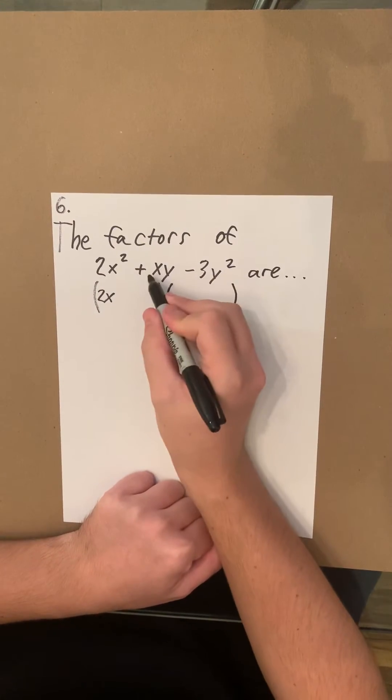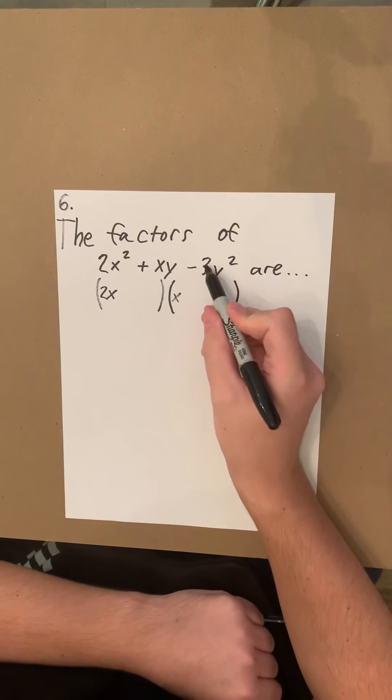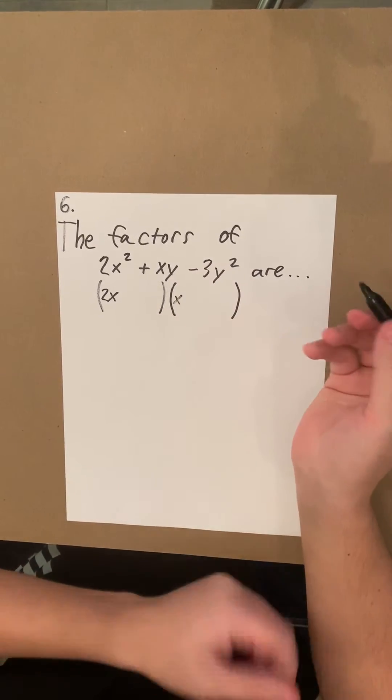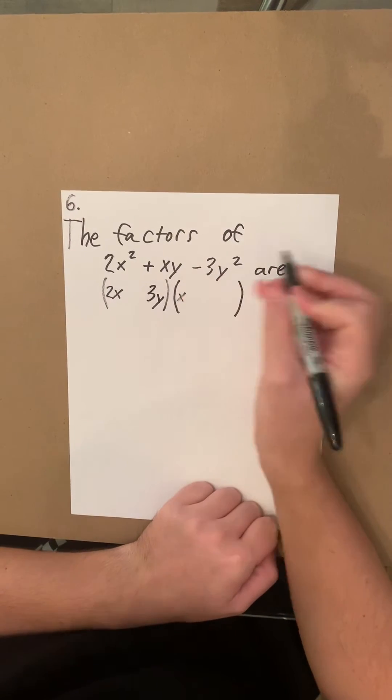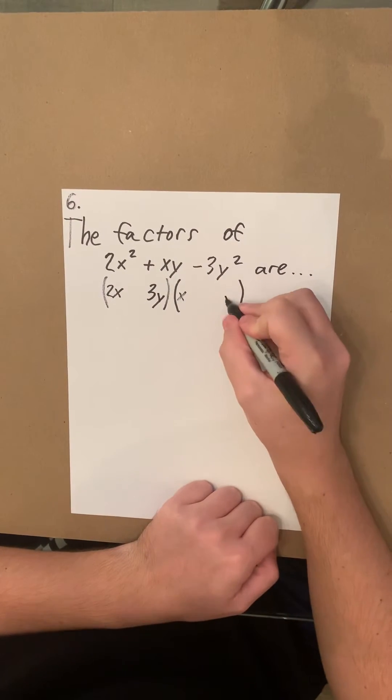We're going to skip the middle term and go to the last term. We have -3y². Since 3 is a prime number, we're going to have 3y times y equals 3y².